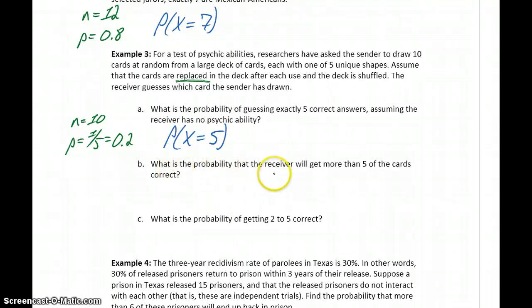In part B, what's the probability the receiver will get more than five of the cards correct? So now here's a point where we have to be careful with that language in our inequality symbol. We want more than five cards, so we want to calculate the probability that X is strictly greater than five. A similar statement that we'll also take a look at calculating would be if instead of more than five, the statement said at least five. So at least five would be the same as five or more, which would mean the probability that X is greater than or equal to five.